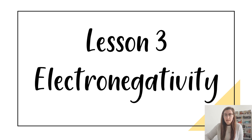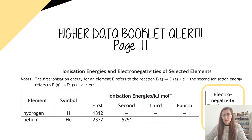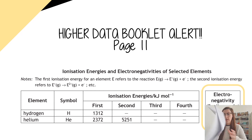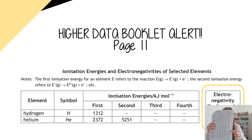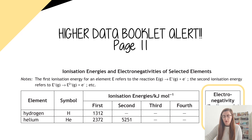Today we're going to be looking at the last of the three trends in the periodic table, and that trend is electronegativity. You are going to need your data booklet again today, but instead of the ionisation energy on page 11, we are looking at the electronegativities — the numbers running down the right hand side of the page. I have circled them on the PowerPoint, and it does say electronegativity at the top.